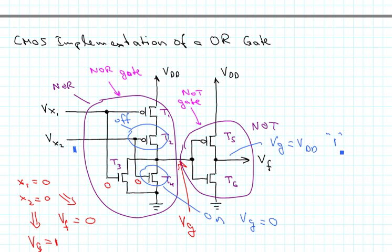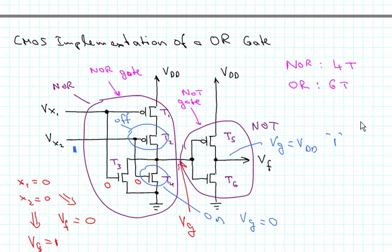The interesting thing is that a NAND gate uses 4 transistors, while an OR gate uses 6 transistors because it must be built as a NOR gate followed by an inverter. Similarly, an AND gate also uses 6 transistors because it is implemented as a NAND gate followed by a NOT gate.